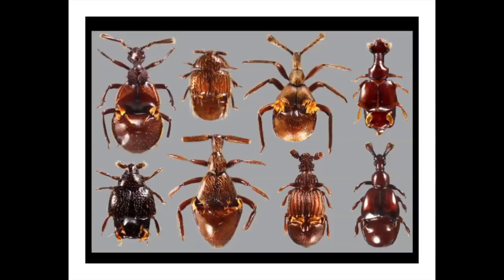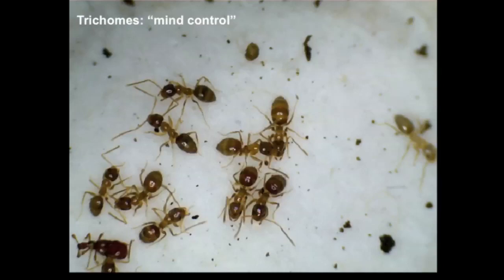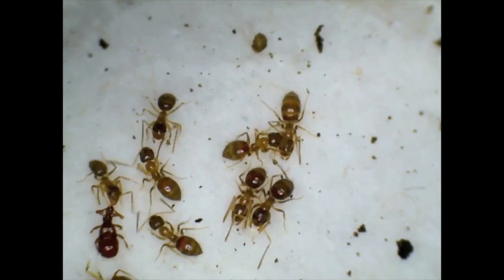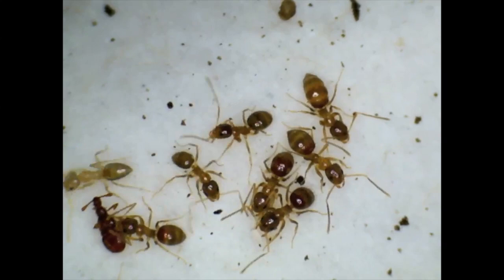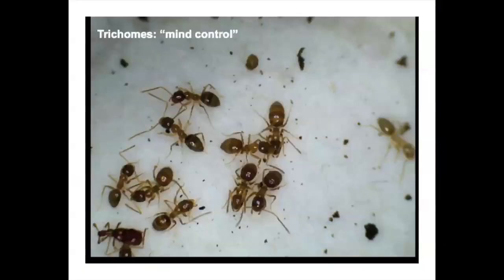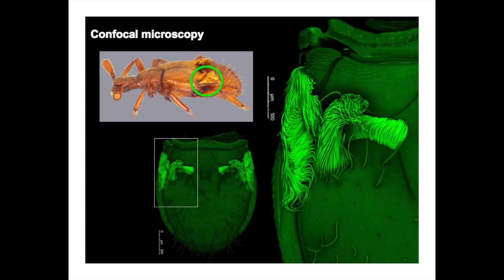These beetles have yellow brush-like structures on their bodies called trichomes. Inside ant colonies, you'll see the ants wander up and start licking this part of the body. These trichomes are like candle wicks which conduct compounds from glands embedded at the base of the abdomen. These compounds behaviorally manipulate ants — ants find the substance really attractive, it overcomes their natural aggression, and causes them to adopt these beetles inside the colony. One line of work I'm really interested in is exploring these trichomes, glands, and the compounds they produce.